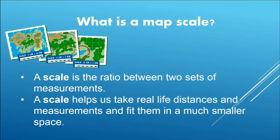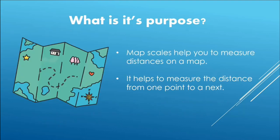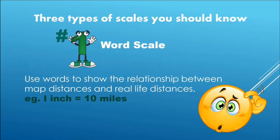What is a map scale? A map scale is the ratio between two sets of measurements. A scale helps us take real-life distances and measurements and fit them in a much smaller space. Its purpose: map scales help you to measure distances on a map — the distance from one point to another. Three types of scales you should know: number one, word scale — uses words to show the relationship between map distances and real-life distances. Example: one inch equals 10 miles.